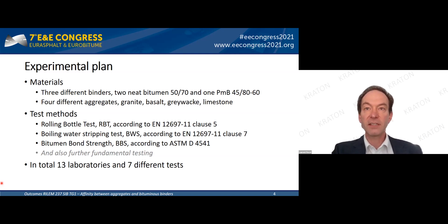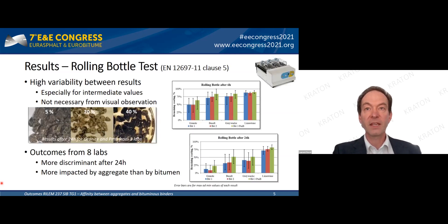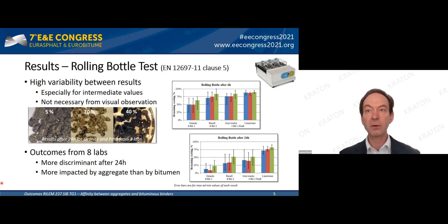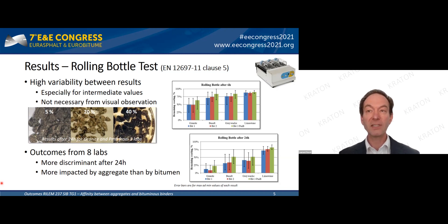Affinity between aggregates and bitumen was assessed with mostly three tests: the common rolling bottle test according to EN 12697-11 Clause 5; the boiling water stripping test according to the same standard Clause 7; and the bitumen bond strength test according to ASTM D4541. In total, 13 different labs participated in this experiment with seven different tests.